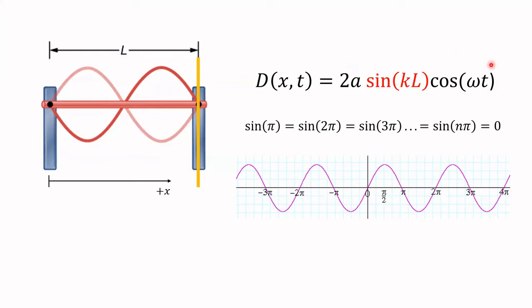Let's confirm his observations mathematically. We know D = 2A·sin(kx)·cos(ωt) describes a standing wave, where x can be any position between the two fixed ends. At the right end x = L, and because that end is fixed, the displacement must be zero at all times. Setting A equal to zero gives zero amplitude — not interesting. Cosine(ωt) oscillates between +1 and −1, so it won't make it zero. The only way to get zero at the fixed end is if the sine function equals zero, which happens at integer multiples of π.